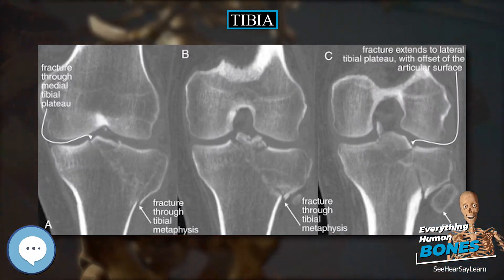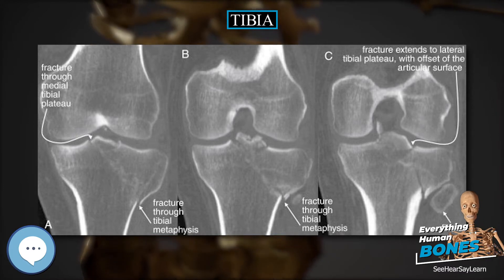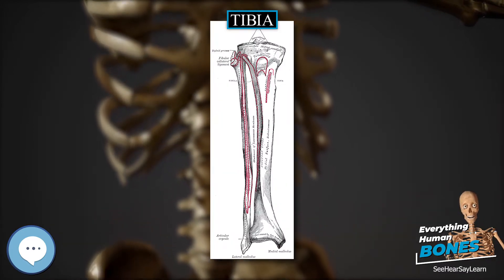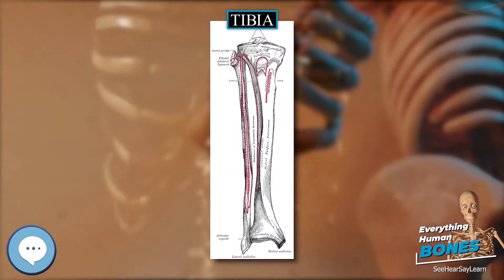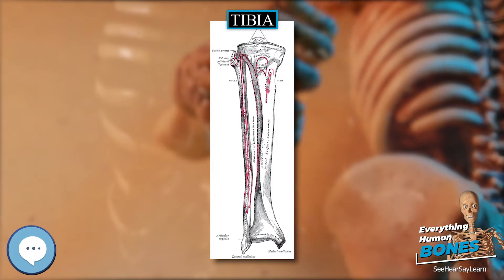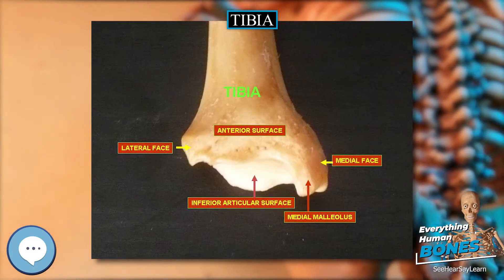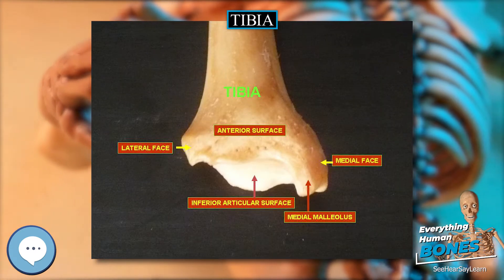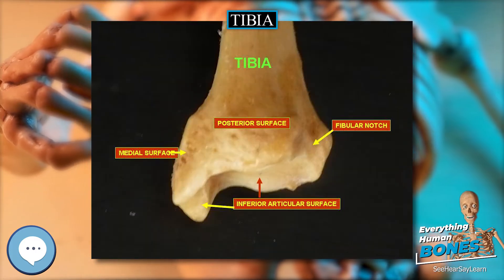The tibia is found on the medial side of the leg next to the fibula and closer to the median plane or centerline. The tibia is connected to the fibula by the interosseous membrane of the leg, forming a type of fibrous joint called a syndesmosis with very little movement.